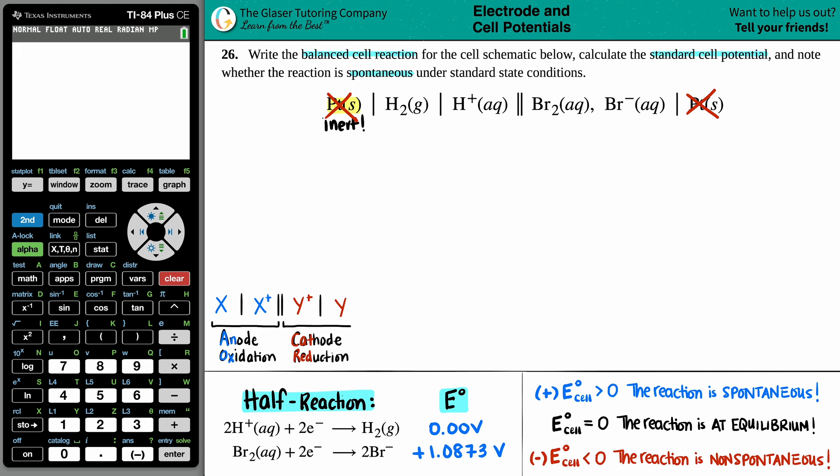Now, just like we said before, the first component is the anode, and the second component is the cathode. That's really going to come in handy when we're going to try to calculate the cell potential, which is what we're going to try to do now.